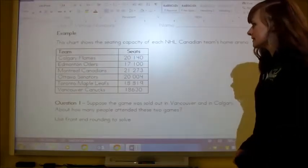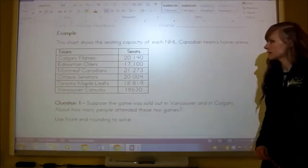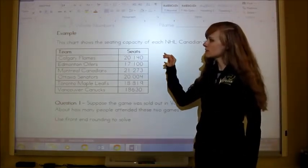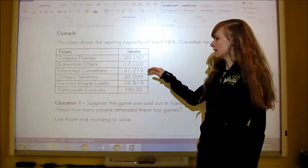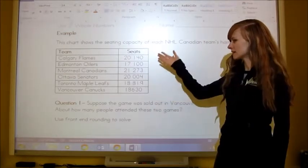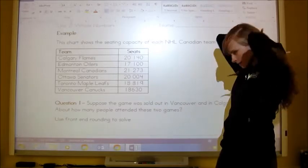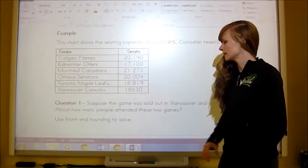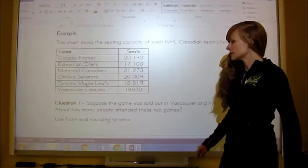Here's an example. This chart shows the seating capacity of each NHL Canadian team's home arena. We've got the Calgary Flames, Edmonton Oilers, Montreal Canadiens, Ottawa Senators, Toronto Maple Leafs, and Vancouver Canucks, and there's all the numbers for them. It looks like there needs to be a space in between that eight and six right here to make it easier to read.